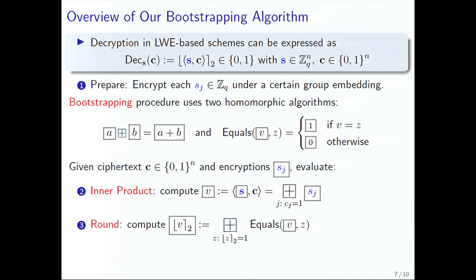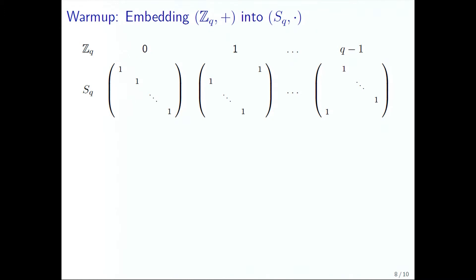Now it remains to show how to implement these homomorphic sum and homomorphic equality. We do it by embedding Z_q under addition into the symmetric heap on Q elements. This is a warm up. We embed into the group of rotation matrices in S_q. Using this representation, we only need to hold on to one column of encryption, where each of these elements is an encrypted ciphertext. We have these Q elements, and to recover a full matrix, we can just rotate the ciphertext and get the whole matrix.